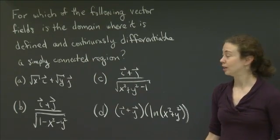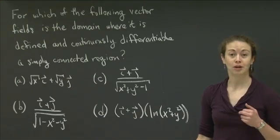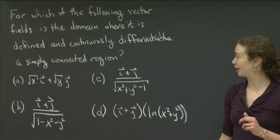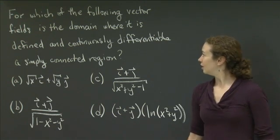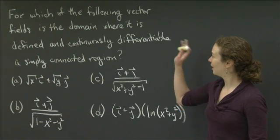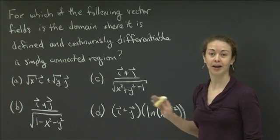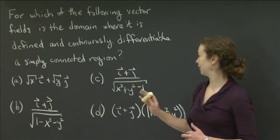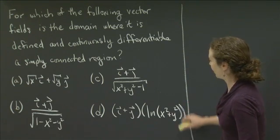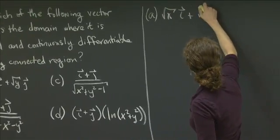For each one, find the domain where it's defined and continuously differentiable, and then determine if that domain is simply connected. So pause the video, work on these, and when you're ready to see the solution, bring the video back up. Welcome back. We're going to do this problem one vector field at a time, starting with part A, which was √x·i + √y·j.